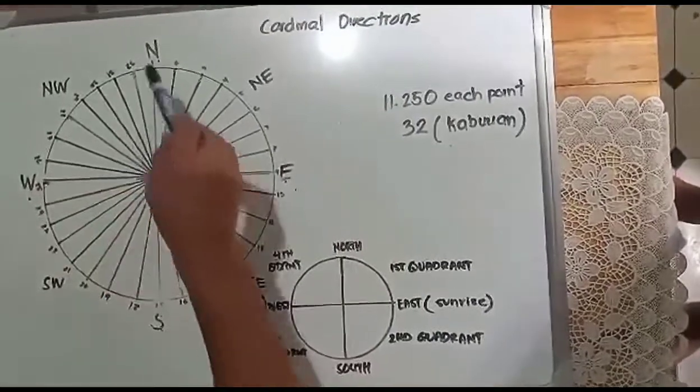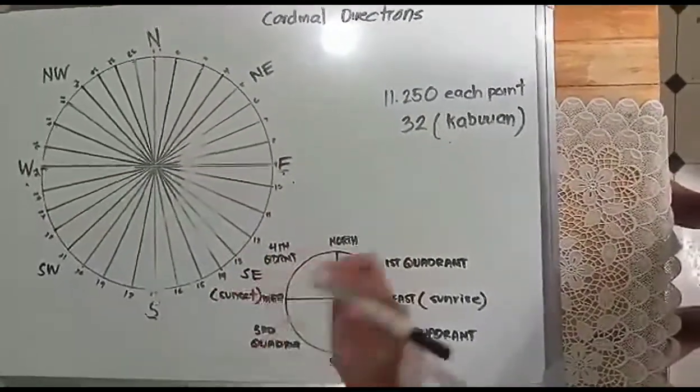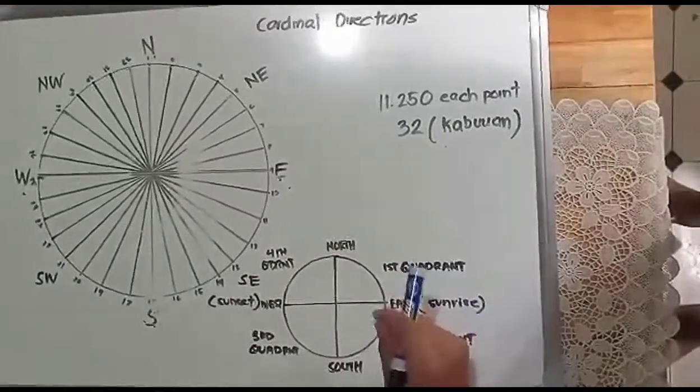Or you can make your own phrases, it's your discretion how you'll remember our cardinal directions. But if you read it in a zigzag pattern: N-E-W-S. Hilaga, Timog, Silangan, Kanluran. That's it. Let's proceed here.